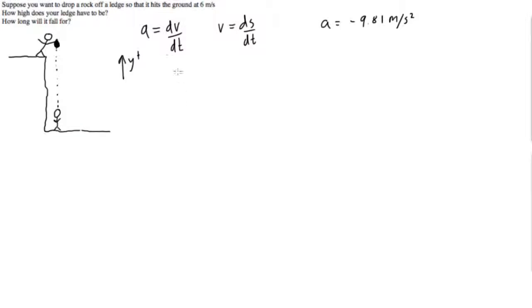Okay, so what we're gonna do is our regular little tricks here with a equals dv over dt. We're gonna separate the variables, so we get dv is equal to a dt.